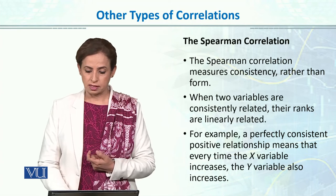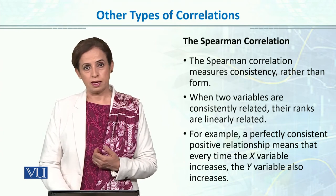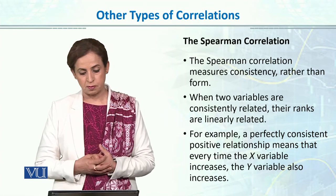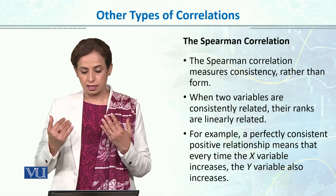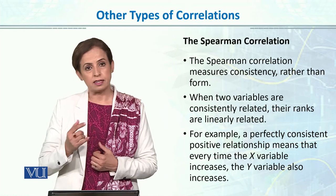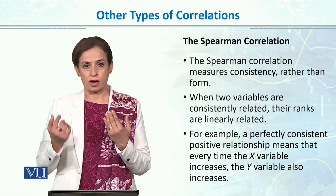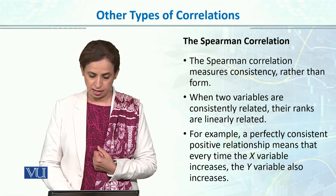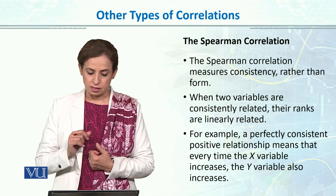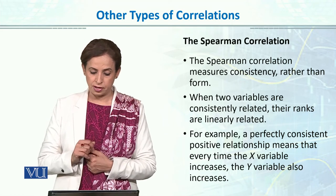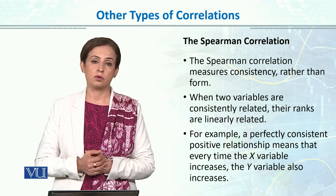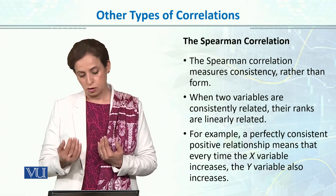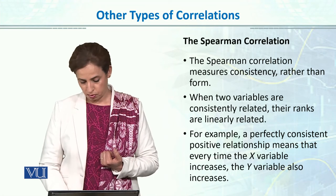The Spearman correlation measures consistency rather than the form of the relationship. We see that both X and Y are on an ordinal scale and we measure consistency. When two variables are consistently related, their ranks are linearly related. For example, a perfectly consistent positive relationship means that every time the X variable increases, the Y variable also increases. The ranks of both X and Y show a perfect consistency, indicating a perfect relationship on Spearman rank order.